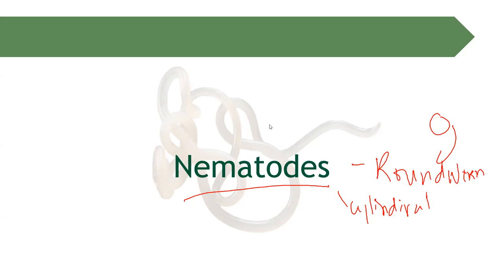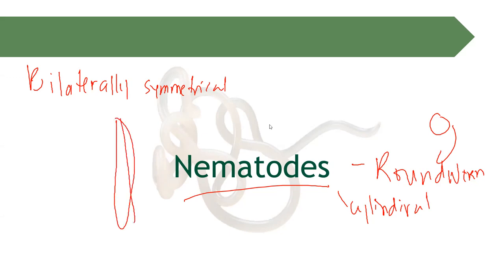Nematodes are also known to be bilaterally symmetrical. When we say bilaterally symmetrical, when you divide the worm into two, whatever organ is present on the left side will also be the same organ present on the right side. Usually, our nematodes are covered with a cuticle, which is a protective covering made up of chitin.